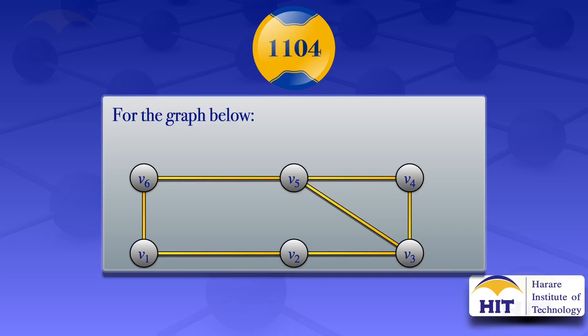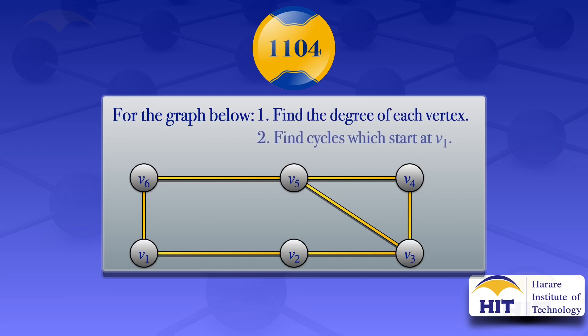For the graph that is given, I'm going to find the degree of each of the vertices, and number two, I'm going to find cycles that start at the vertex v1.